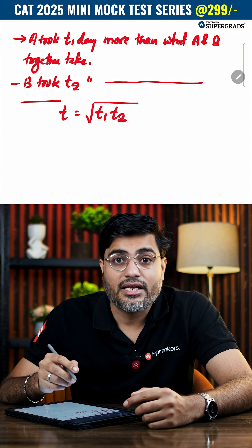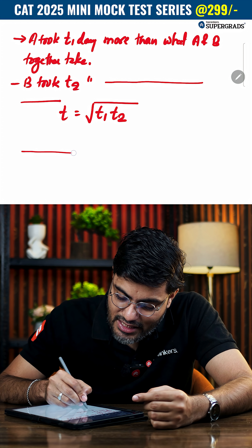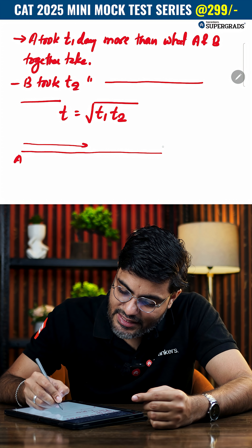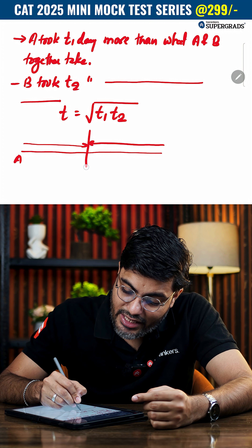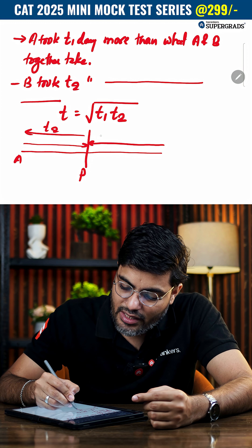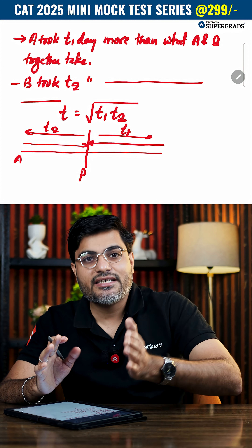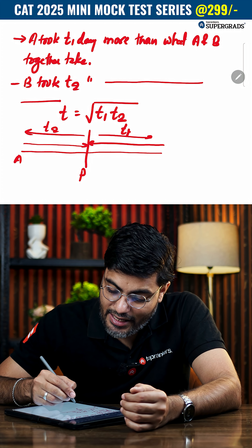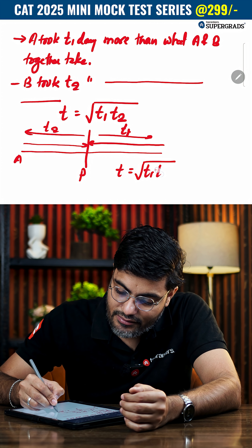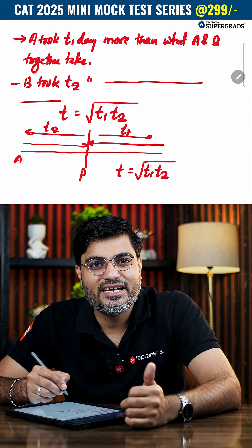The same formula is applicable when A starts moving towards B and B starts moving towards A, they meet at a point P, and later B took T2 time and A took T1 time to reach each other's starting point. Here also, the time taken to meet is √(T1 × T2). Go ahead, apply this, and keep liking, sharing, and subscribing.